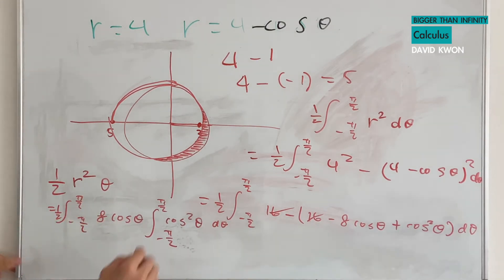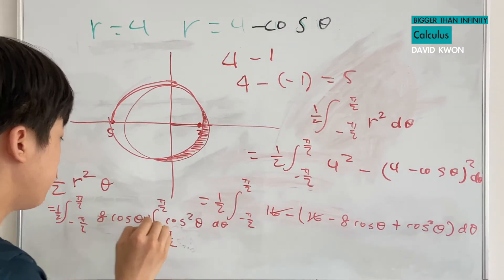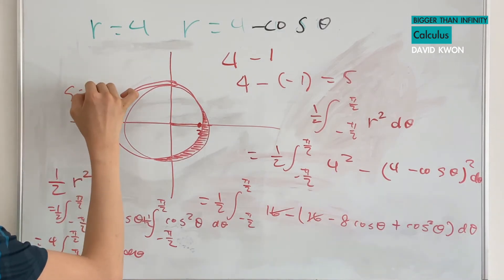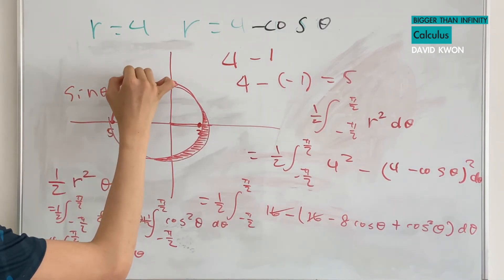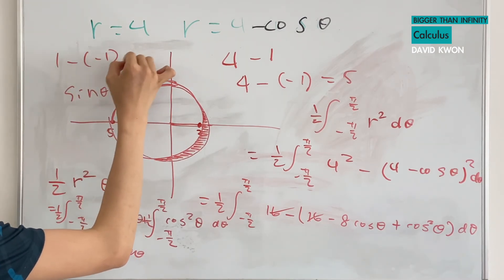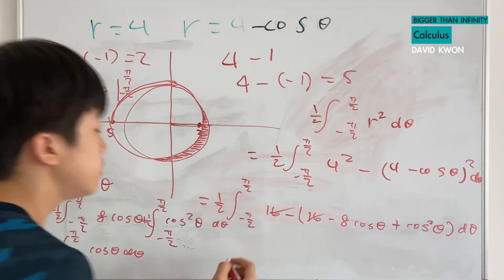And also I'm going to have a 1 over 2 up here. This can be equal to 4 times the integral from negative pi over 2 to pi over 2 of cosine theta d theta. And now when I integrate cosine theta, I will get sine theta from negative pi over 2 to pi over 2. And that is 1 minus negative 1, so that's going to be 2. But there's a 4, so that's 8.